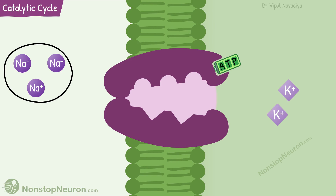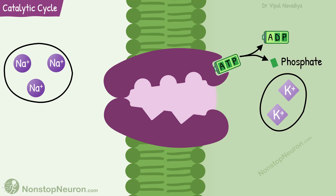Thus, during each cycle, three sodium ions are moved out, two potassium ions are moved in, and one ATP is hydrolyzed into ADP and phosphate.